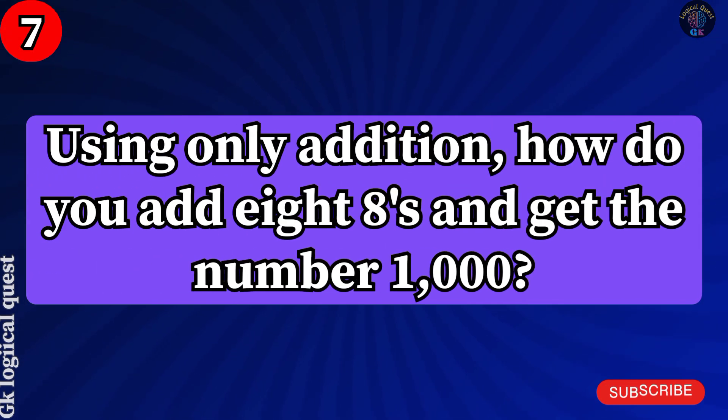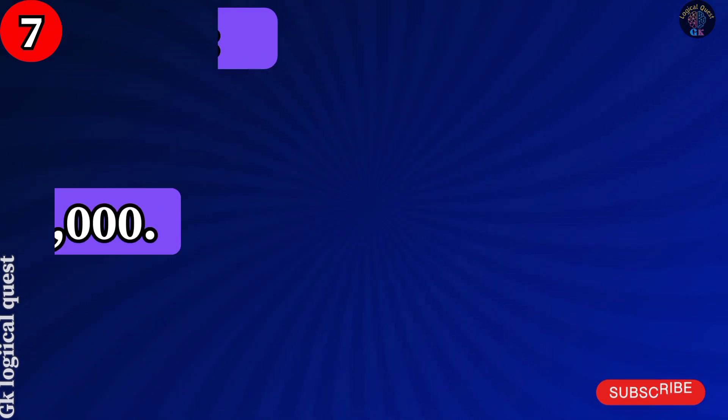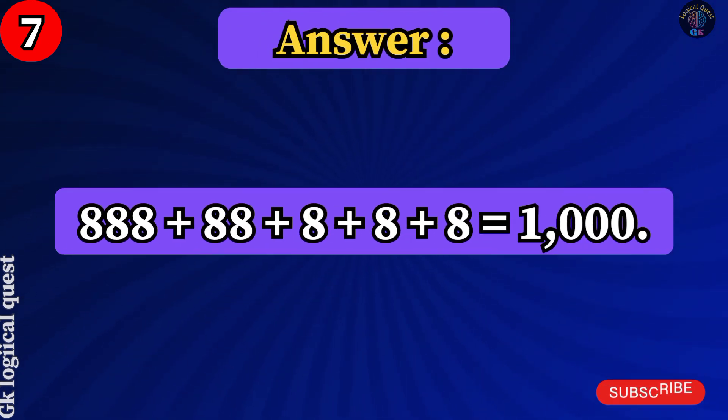Using only addition, how do you add 8 8s and get the number 1000? Answer: 888 plus 88 plus 8 plus 8 plus 8 is equal to 1000.